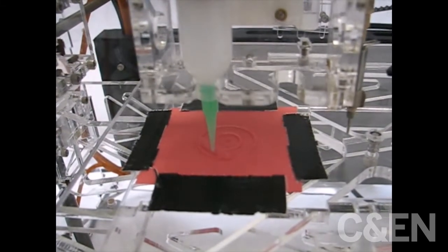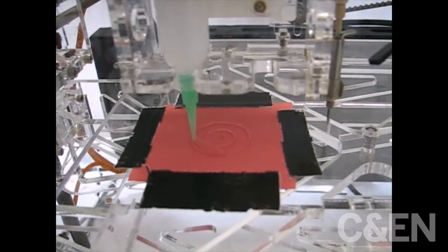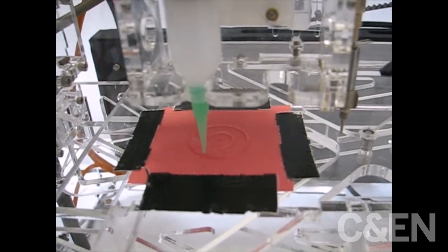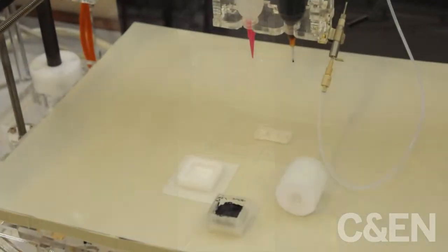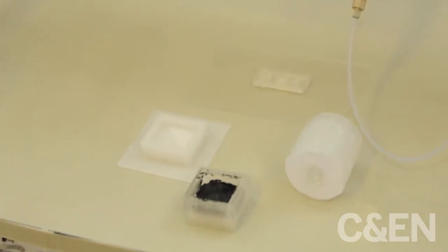Cronin and his team constructed their own 3D printer, which uses syringes to extrude materials during fabrication. The researchers manufacture their chemical reactors with a fast-curing acetoxy silicone.